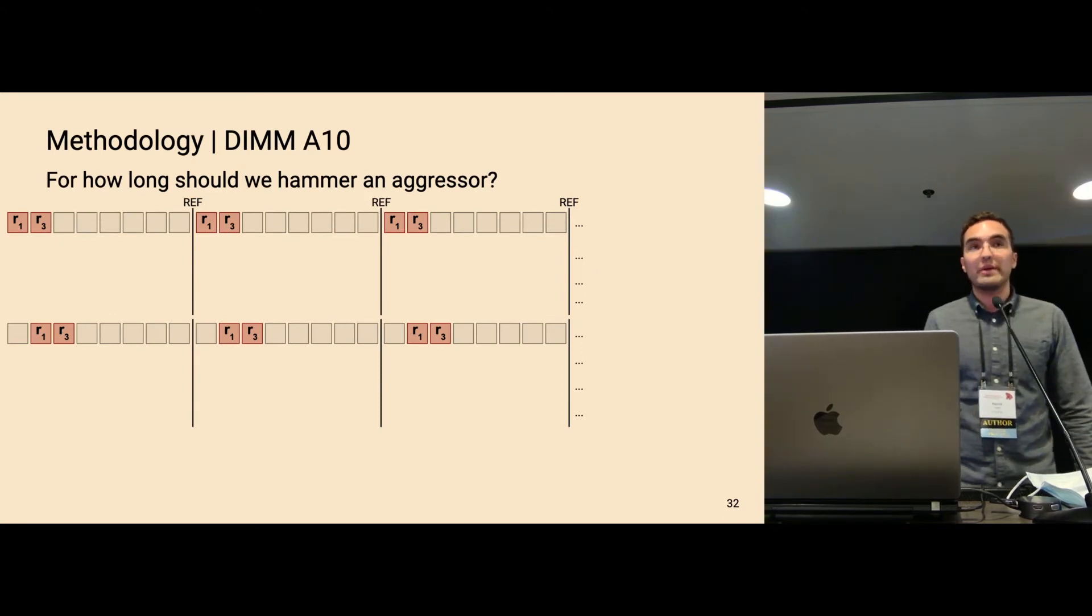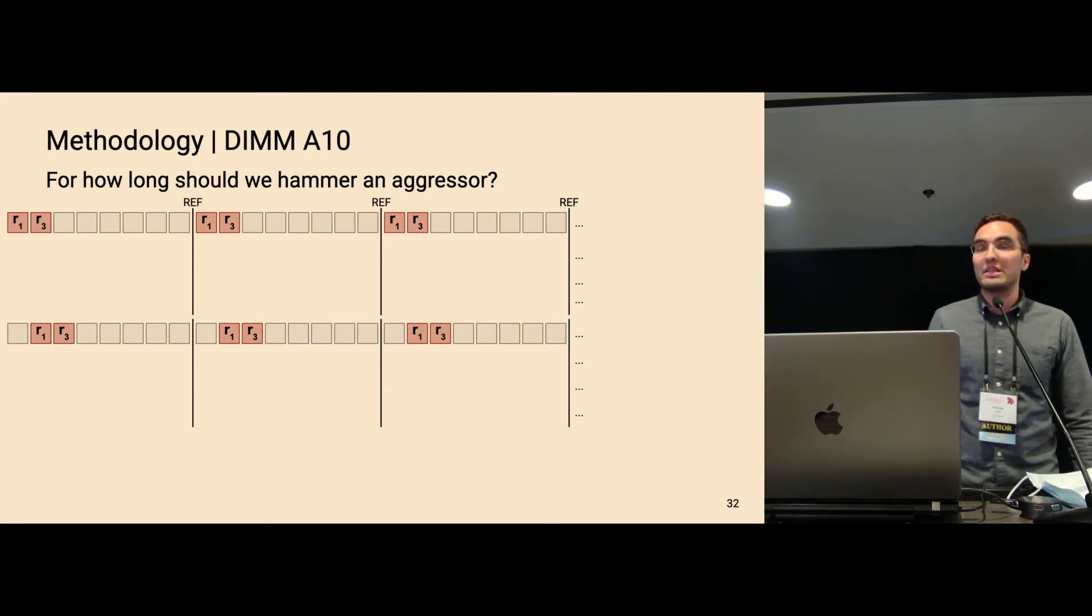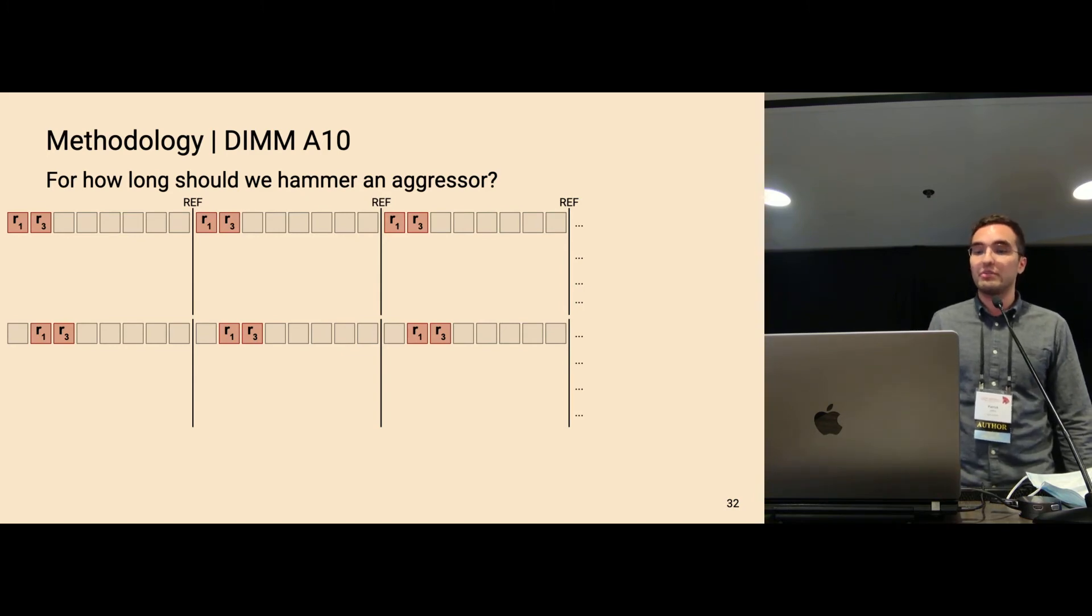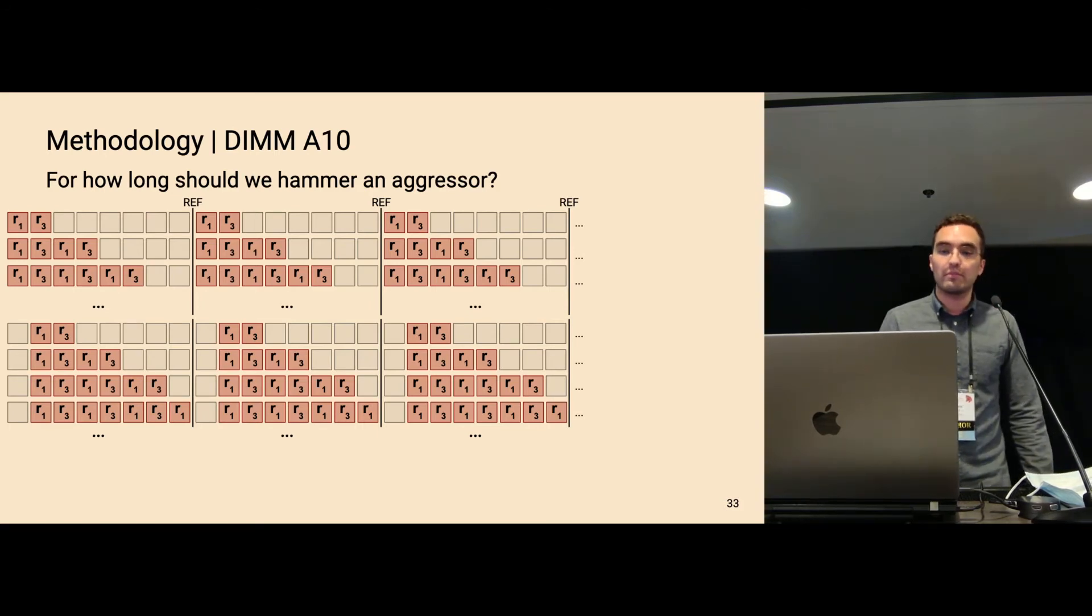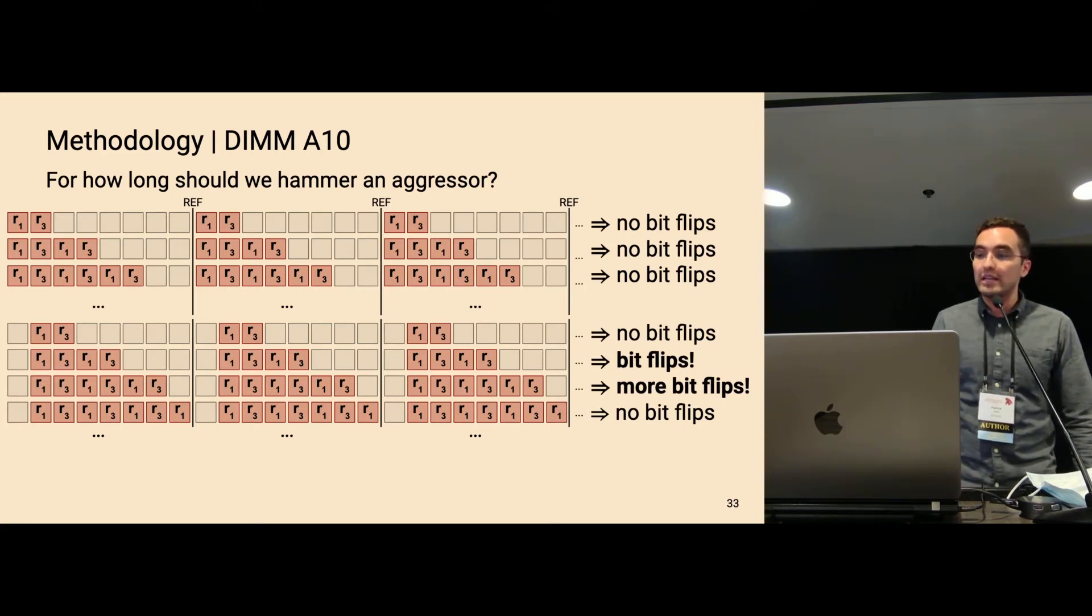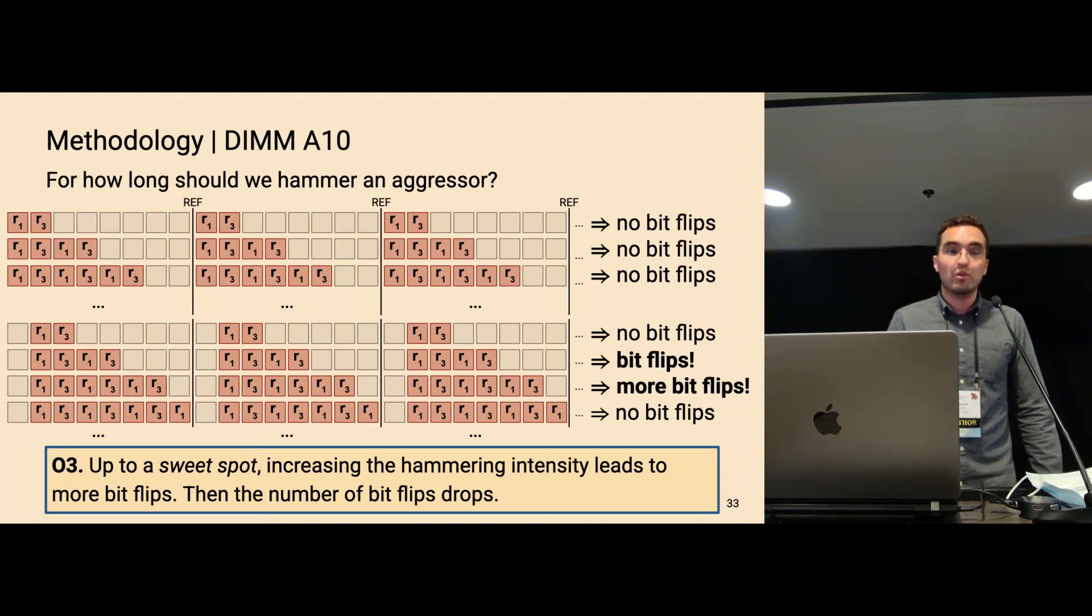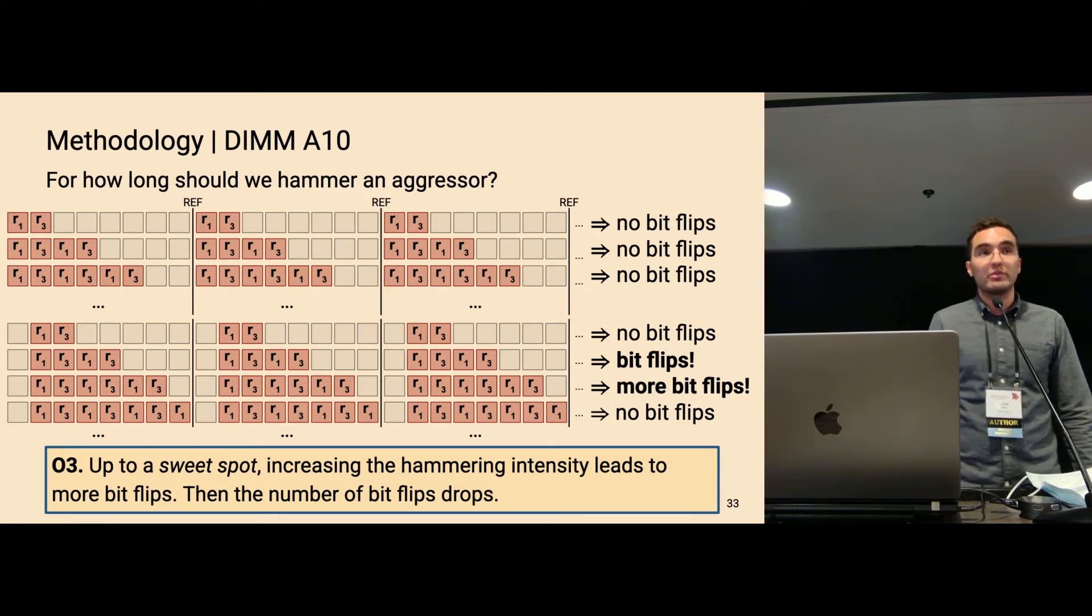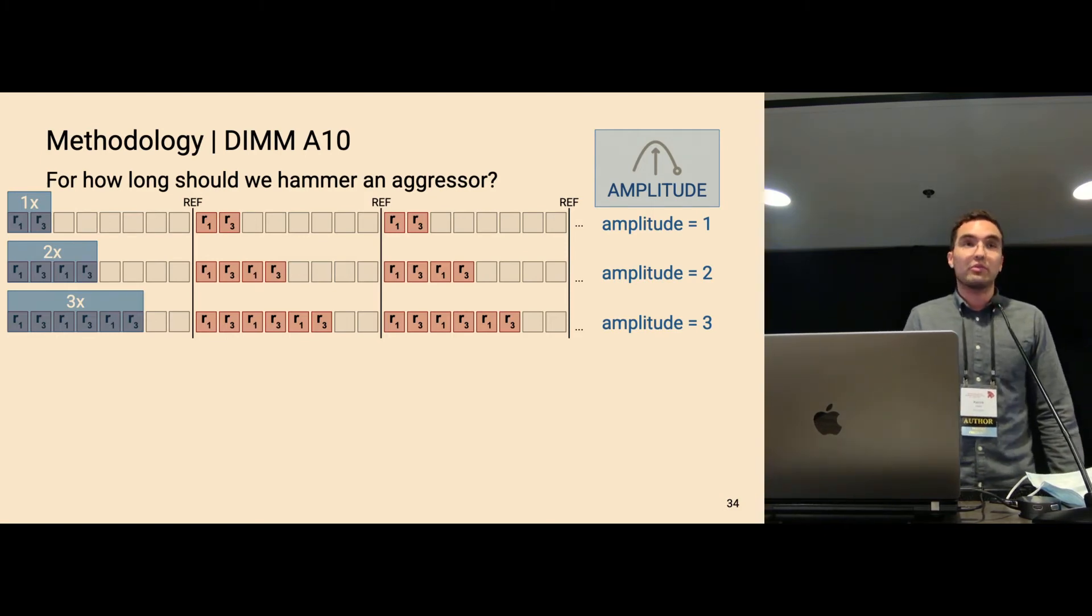In the next experiment, we wanted to know for how long should we hammer an aggressor? Because if we increase the time that we hammer an aggressor, we potentially can trigger more bit flips, and this makes exploitation easier. So we start again with the same experiment setup as before, that we shift this double-sided aggressor pair. But now additionally, we try more intensities. So instead of just hammering it one time, we also try two times, three times, etc. And what we observed here on this device A10 again, is that if we increase the intensity, we can trigger more bit flips, but only up to a certain sweet spot. And then if we go over that sweet spot, then the number of bit flips drops. And this could be explained again by the sampler that might sample us too often if we have a too high hammering intensity, and then sends TRR before we can trigger any bit flips. And this concept can be mapped to the concept of an amplitude, where a higher peak corresponds to a higher hammering intensity.